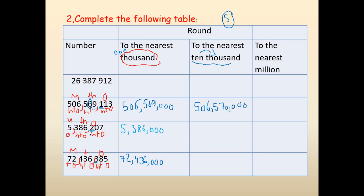Here the same — find the tens digit in the thousand family. It's eight. Look at six. It's bigger than five, so eight becomes nine. So five, three, nine — then all the digits will be zeros. Here the tens digit is three. Look at six — it's more than five, so I will add one. So seventy-two million, four — three becomes four because we added one. Then I will write zeros.